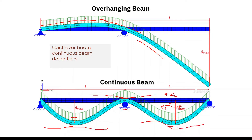These are the areas where we need reinforcement: bottom, top, bottom. At the top we may need only nominal or minimum reinforcement. So for a beam, at the support we have to provide top reinforcement, and at the mid-span we have to provide bottom reinforcement — that is the key.